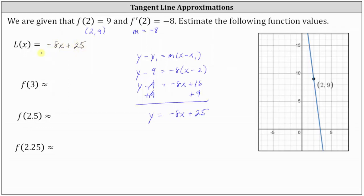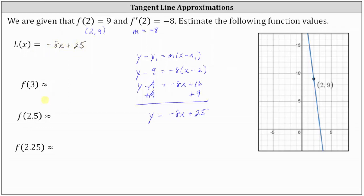Now we use this tangent line to approximate the function values. f of 3 is approximately L of 3, which is equal to negative 8 times 3 plus 25, which equals negative 24 plus 25, which equals positive 1. So our estimate for f of 3 is positive 1.